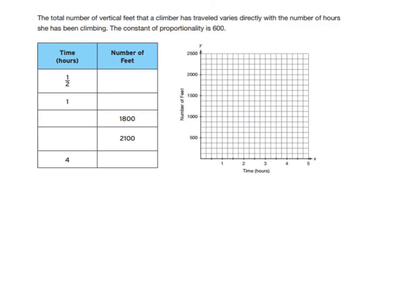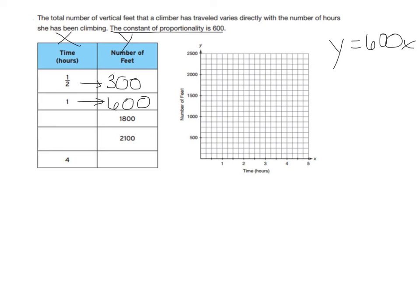Next problem: the total feet a climber has traveled varies directly with hours climbing. The constant of proportionality is 600, so the equation is y equals 600x. Time is the independent variable x, and number of feet is the dependent variable y. Plugging in: 600 times one-half is 300; 600 times 1 is 600. Going backwards, we divide by 600: 1,800 divided by 600 is 3.